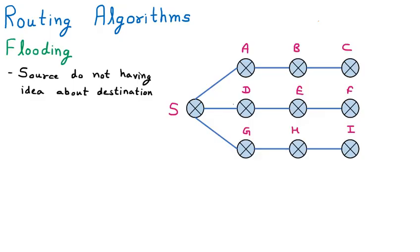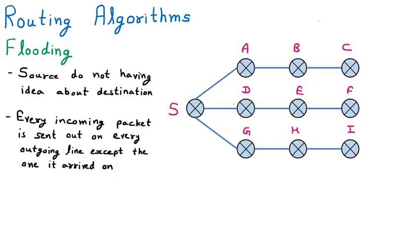Every incoming packet is sent out on every outgoing line except the one it arrived on. The source sends packets in all directions but not back to itself. In the diagram, source S sends the packet in all directions. These routers forward the packets to further routers, and those routers forward them to their connected neighbors, so the packet goes everywhere — we can call this broadcasting.